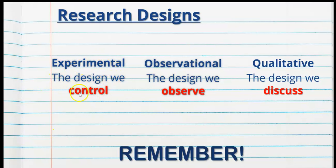An easy way to remember the differences: experimental is the design we control — we have complete control over most things. Observational is the design we observe — very little control, observing behavior in the participant's natural setting. Qualitative is the design we discuss — talking about it in a focus group, with experts via the Delphi technique, or through interviews. I hope you found that video useful — if you have any questions, let me know.